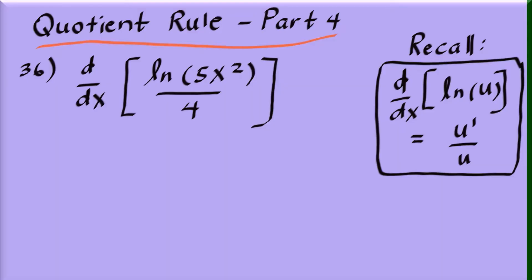Problem 36: different shape. We need to differentiate the natural log of 5x squared over 4. Recall that the derivative of natural log of u is u prime over u. Our u is 5x squared, and its u prime is 10x.